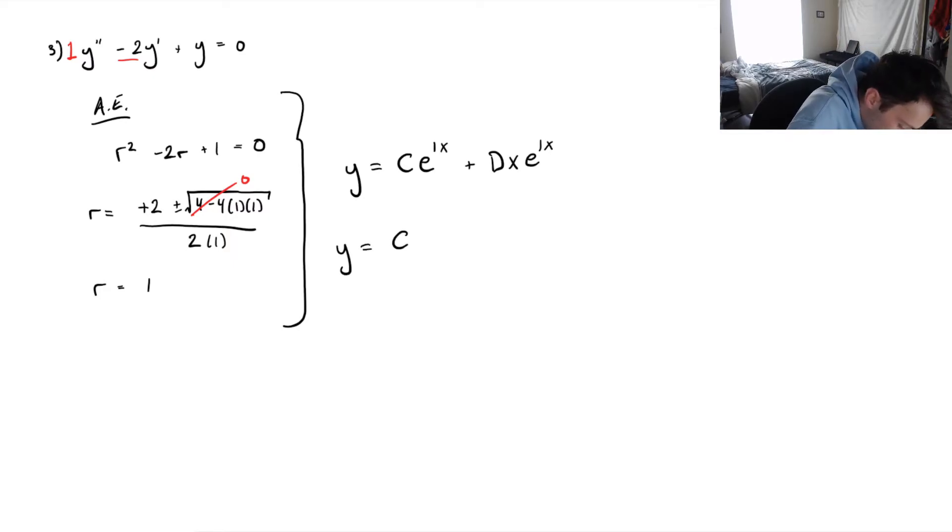So, I'll clean that up just a little bit. y equals ce to the x plus dx e to the x, where c and d are real numbers. And, this is it.